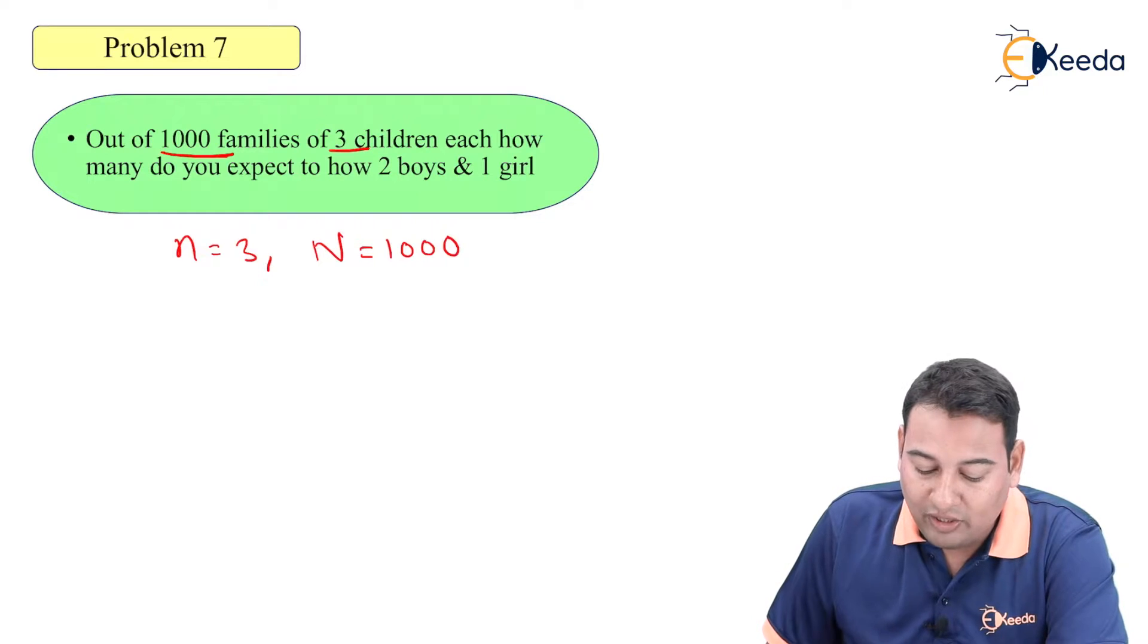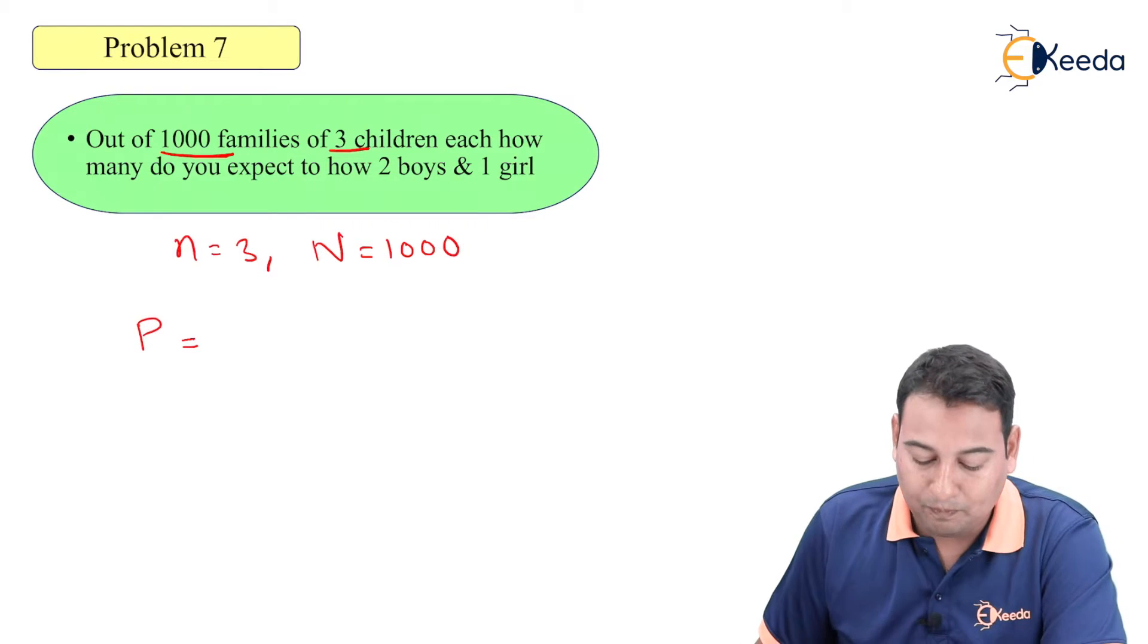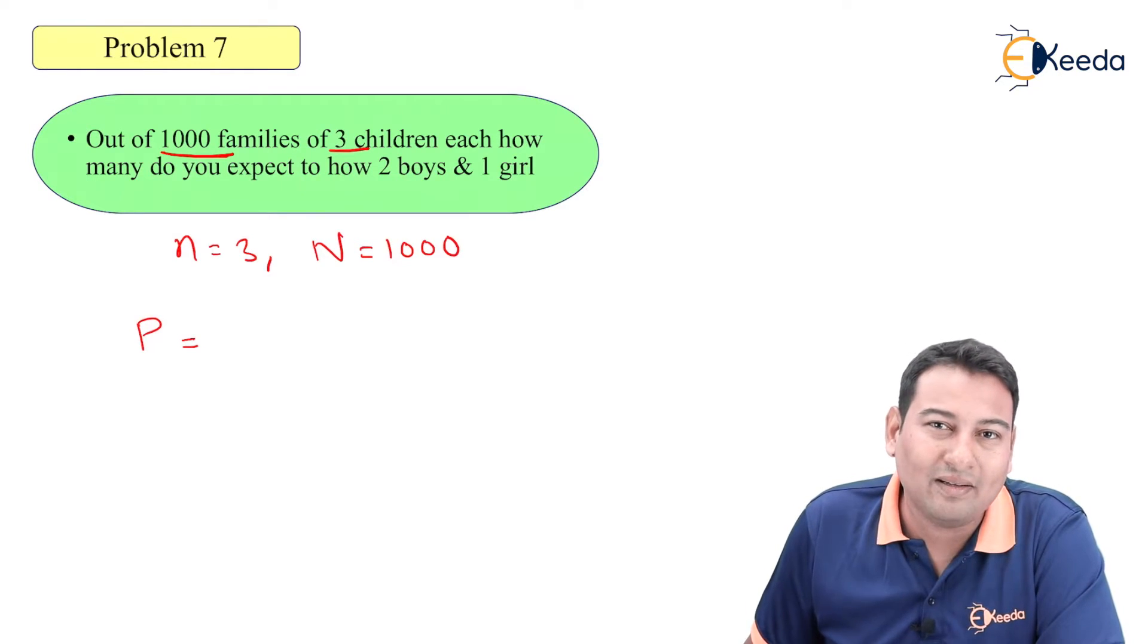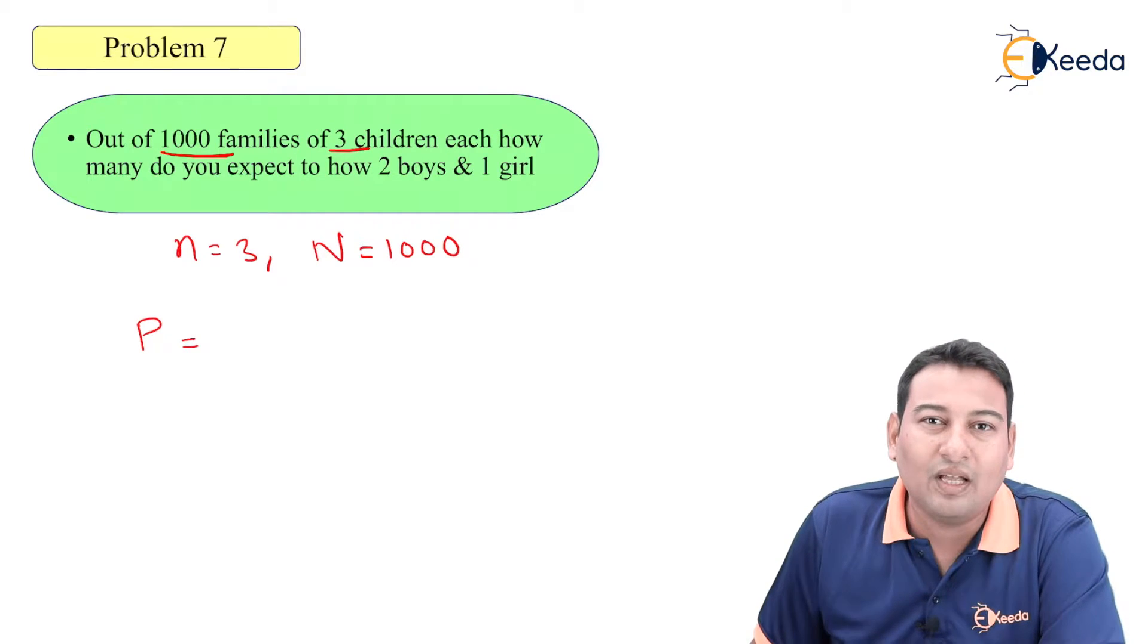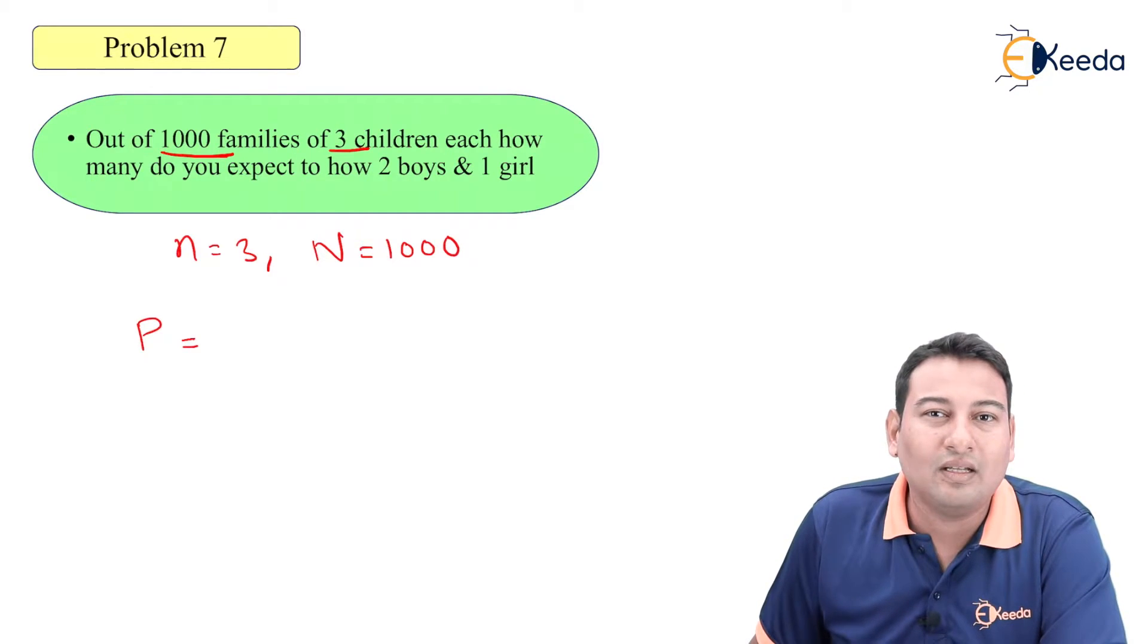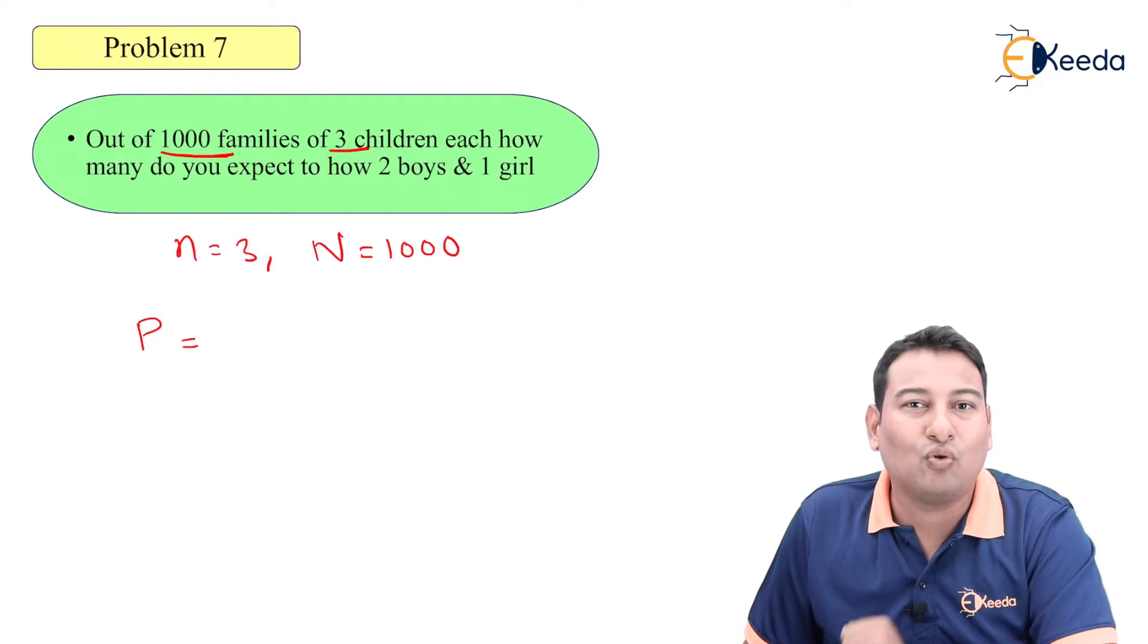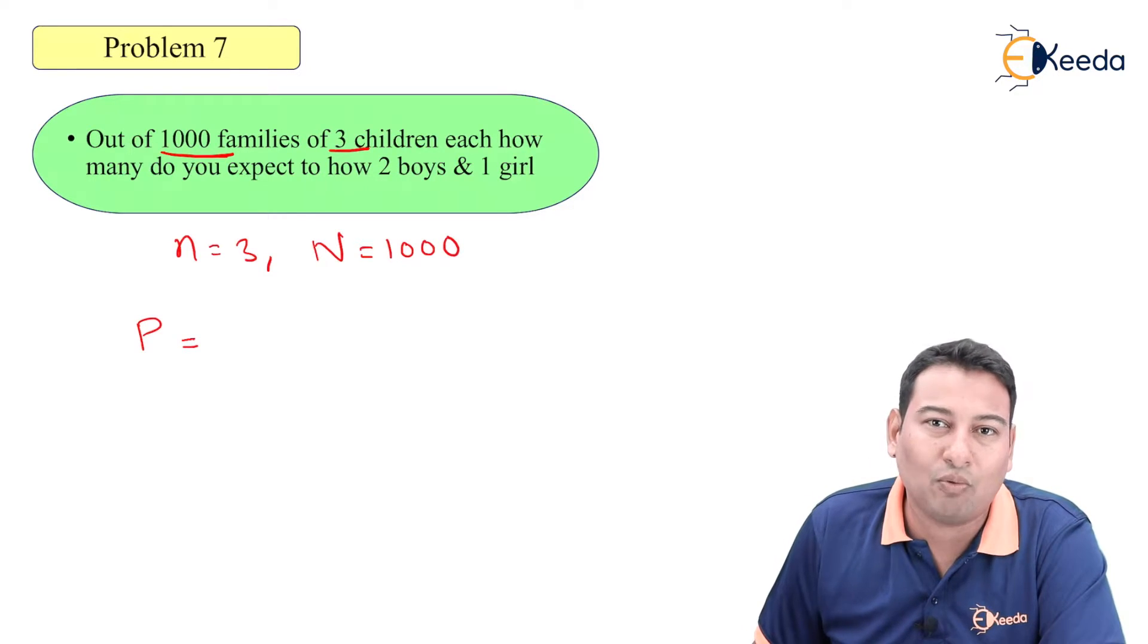How many do you expect to have 2 boys and 1 girl? Let me write down the probability of success. Now for some families, boy will be success and for some families, girl will be success. Doesn't matter because probability of boy is 1 by 2 as well as girl is 1 by 2. What is probability? How many times it has occurred upon total number of times? Boy is 1 out of 2, that is boy and girl. So 1 by 2 is the probability of boy, 1 by 2 is the probability of girl.